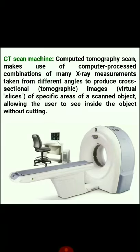Next instrument is the CT scan machine. CT scan, or computed tomography scan, makes use of computer-processed combinations of many x-ray measurements taken from different angles to produce cross-sectional tomographic images — virtual slices of specific areas of a scanned object — which allow the user to see inside the object without cutting it.